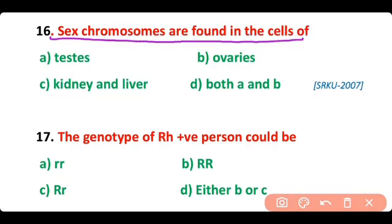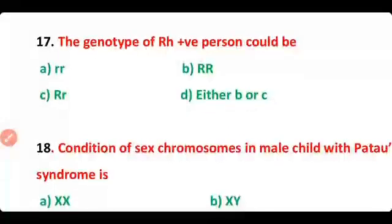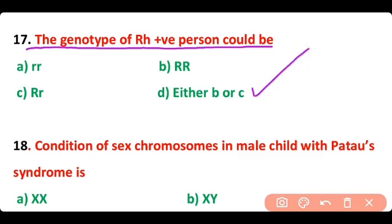Question number 16. Sex chromosomes are found in the cells of — so correct answer is option D. Sex chromosomes are found in testes as well as ovaries.